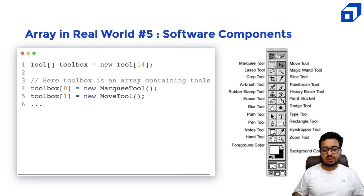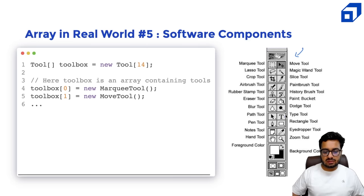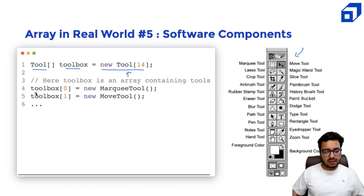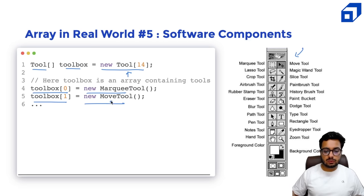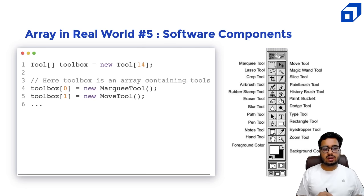Another example: when building a software component like Photoshop, you might have a grid where every item is a tool. You can say toolbox is a new array of tools, and in every index you create a new tool — MarqueeTool, MoveTool, etc. Arrays are used a lot in building real-life software. That is the importance of arrays.